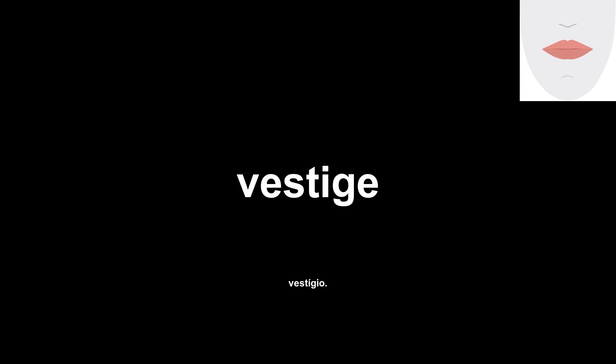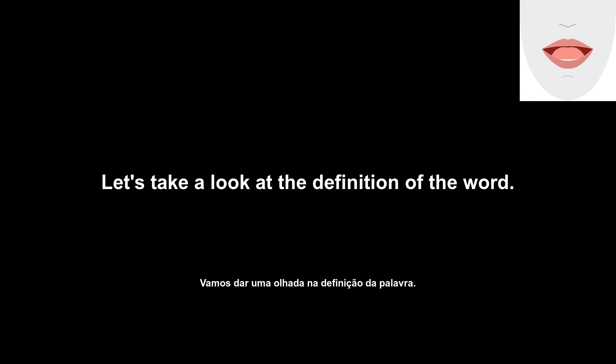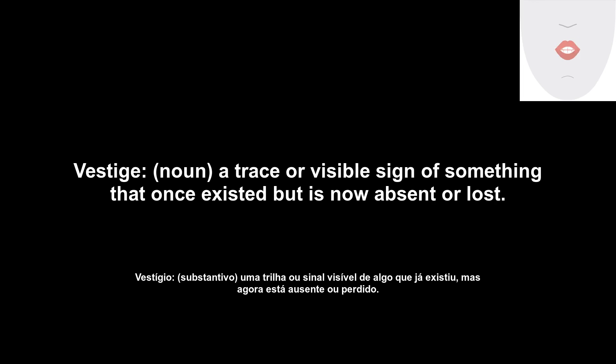Vestige. Let's take a look at the definition of the word. Vestige, noun: a trace or visible sign of something that once existed but is now absent or lost.